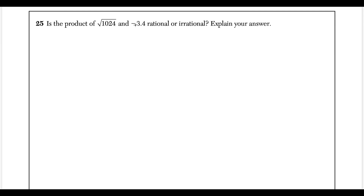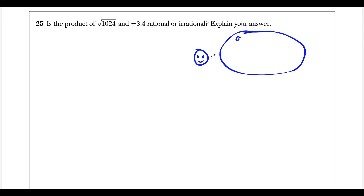For question 25, we want to know if this product is rational or irrational. To answer a question like this you have to know what it means for something to be rational. A rational number is a number that could be expressed as a fraction A over B, where A and B are integers — whole numbers including zero and negative numbers — and B is not zero because that would be undefined.